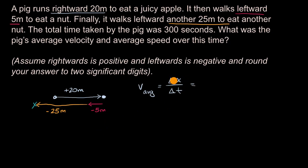And so what is our displacement going to be? Let's see, we have plus 20 meters. And then we have minus five meters. And then we go to the left another 25 meters. Minus 25 meters. And then all of that is going to be over the elapsed time, which is over 300 seconds.